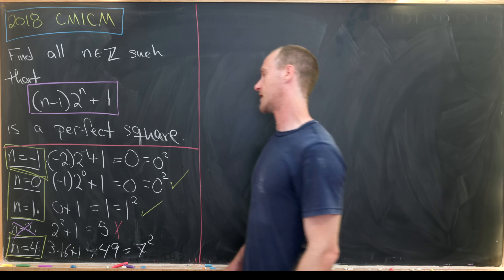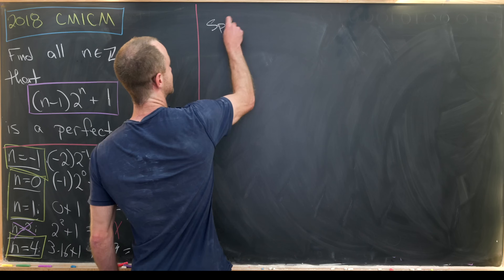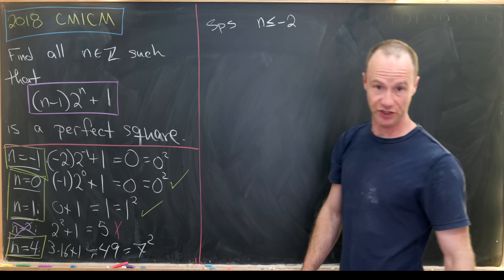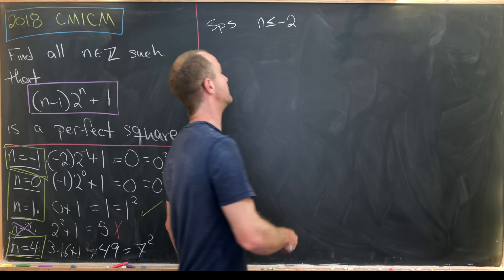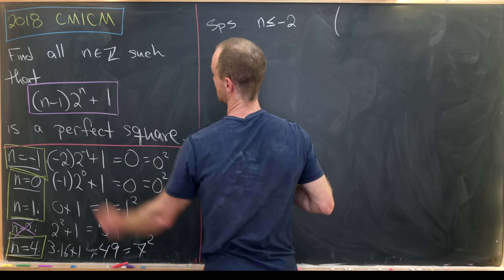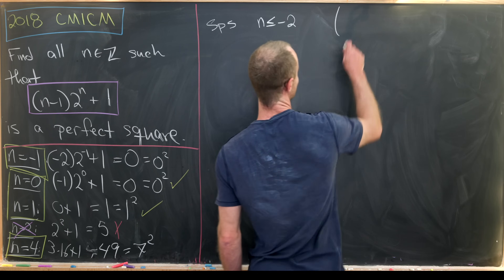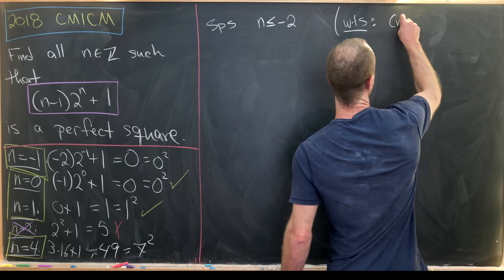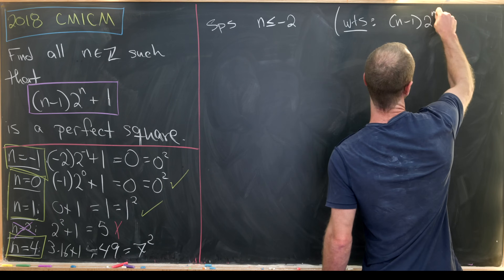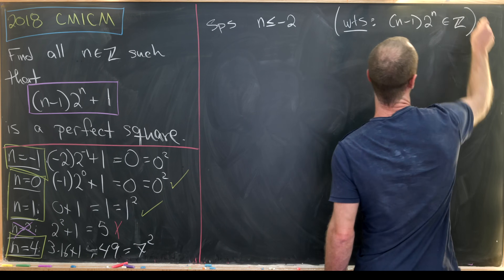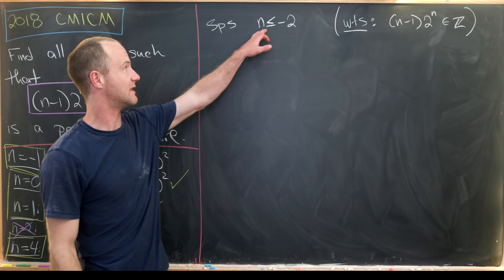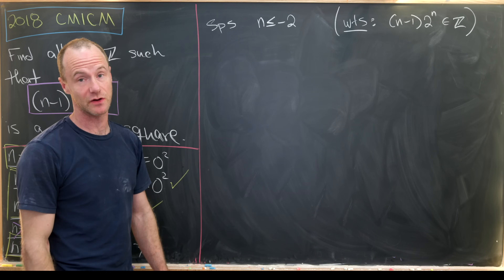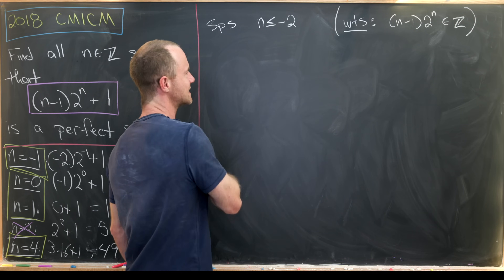Now let's suppose n is less than or equal to negative 2. The issue is that (n minus 1) times 2 to the n is not an integer in this case. We want to show that (n minus 1) times 2 to the n is not an integer.